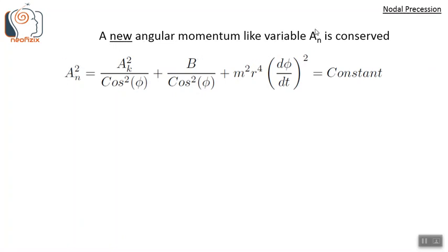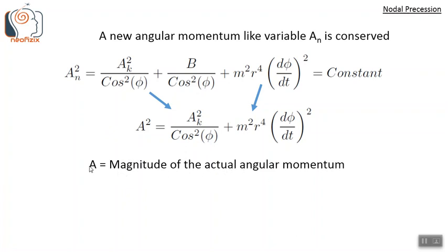There is a new angular momentum-like variable called A_N, where the subscript N stands for 'new', which gets conserved. A_N² is defined as: A_N² = A_k²/cos²φ (related to the zonal component) + b/cos²φ (from the altered gravitational potential) + m²r⁴(dφ/dt)² (related to the meridional component). The summation of these three terms is a constant with units of angular momentum squared. The actual magnitude of angular momentum squared, A², equals only the zonal and meridional component terms — it does not include the b term from the gravitational potential.